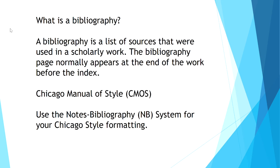Now let's talk about what a bibliography is. It is a list of sources that were used in a scholarly work that appears at the end of the work before the index. It may also include other sources that were not actually used in the work, but may be helpful to the readers. History works normally use the Chicago style of formatting. Sometimes you may hear the Chicago Manual of Style being referred to as CMOS. When using the Chicago style for bibliography, the notes, bibliography, or NB style is preferred.